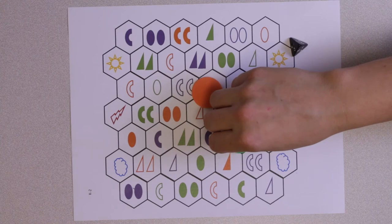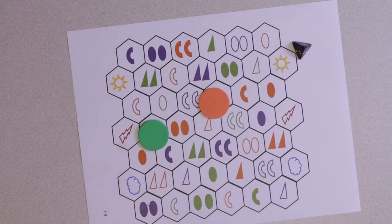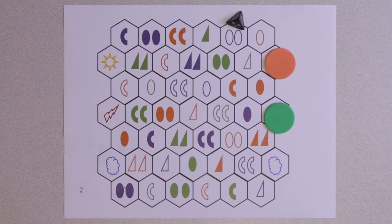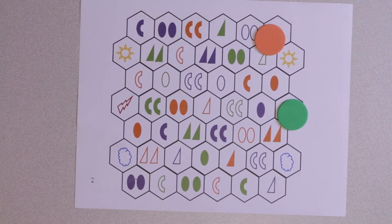After the first player rolls and moves, their turn is done. Play moves to the player on the left. Orange goes first. They roll a 1. Their only move is to move from the start space onto the board. Then their turn is done. Orange chooses to move from the orange to the orange oval.